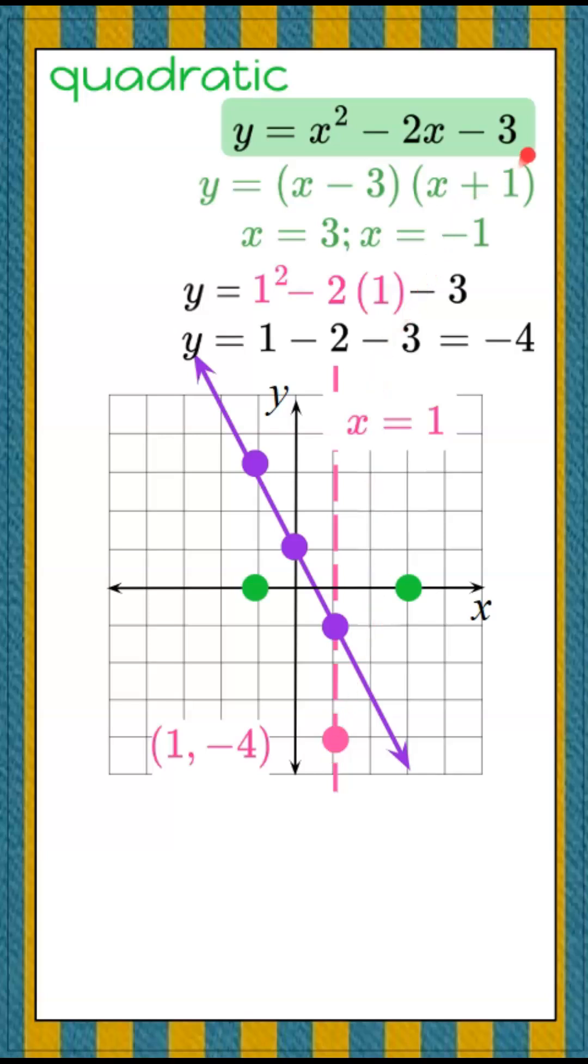The other thing I know is the y-intercept is negative 3. That means I have to have a point on the other side because it's symmetrical, and now I can graph my quadratic.